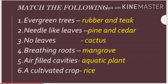Match the following. Evergreen trees — you can match with rubber and teak. Needle-like leaves — pine and cedar. That is F part. Then no leaves — cactus. Breathing roots — mangrove. Air-filled cavities — aquatic plant. And a cultivated crop — rice.